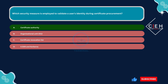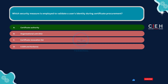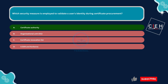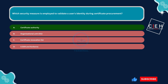Option D, X.509 and Kerberos, is incorrect. X.509 is a standard format for public key certificates, and Kerberos is a network authentication protocol. While both X.509 and Kerberos are relevant to authentication and security in network environments, they do not specifically validate a user's identity during certificate procurement. Instead, X.509 defines the structure of certificates and Kerberos provides a framework for secure authentication. Therefore, this option is incorrect.